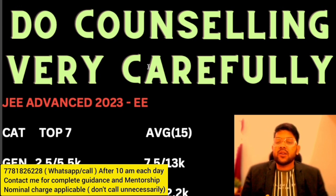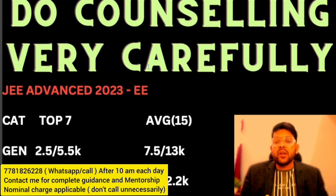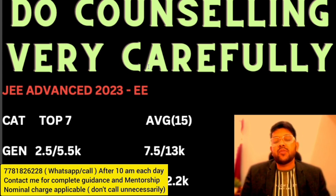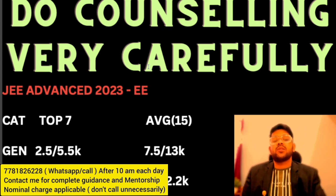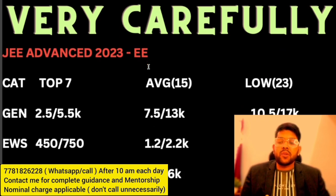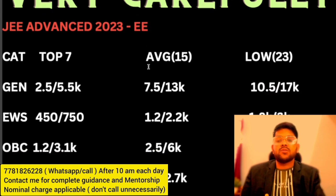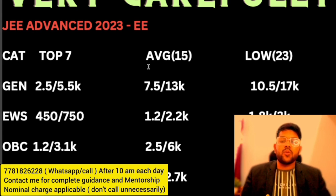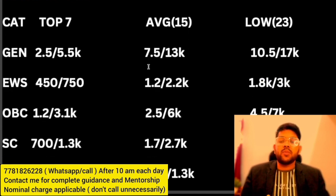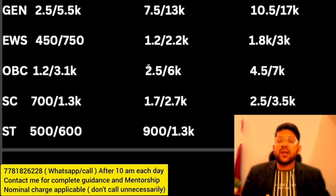For Electrical or Electronics Engineering: top 7 IITs require General rank 2000–2500 (male) and up to 5500 (female). Average IITs (up to 15): 7500–30000, lower IITs: 10500–70000 (male/female general). EWS: 450–750 for top 7, 1200–2200 for average, 2500–6000 for lower. OBC: 1200–3100 for top 7, 2500–6000 for average, 4500–7000 for lower. SC: 700–1300 for top 7, 1700–2700 for average, 2500–3500 for lower. ST: 500–600 for top 7, 900–1300 for average, 700–1500 for lower.